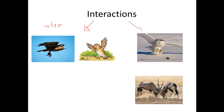The other type is intraspecific — among the same species. An owl tries to capture the mouse, and another owl also tries to catch the same mouse for food. Like these two animals, they fight over something like water or food, or during mating season for the female organisms.